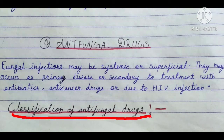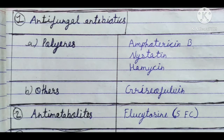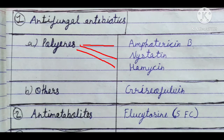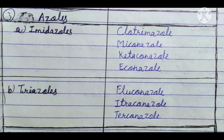Now let's see the classification of antifungal drugs. First, they are classified as Antifungal Antibiotics: A) Polyenes — drug names: Amphotericin B, Nystatin, and Hamycin; B) Others — Griseofulvin. Second category: Antimetabolites — drug name: Flucytosine, also known as 5-FC. Third: Azoles, which are of two types.